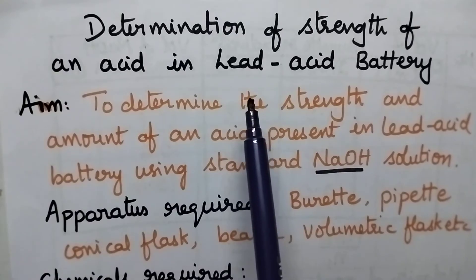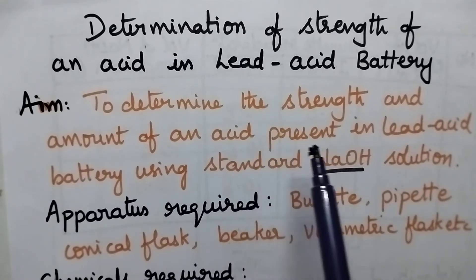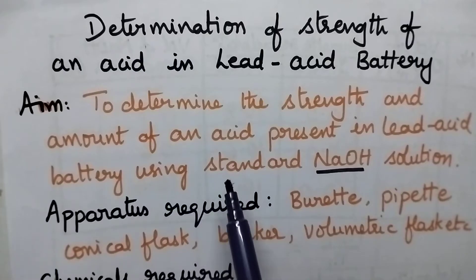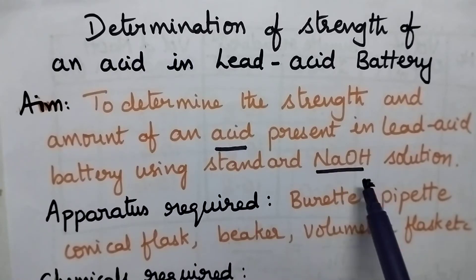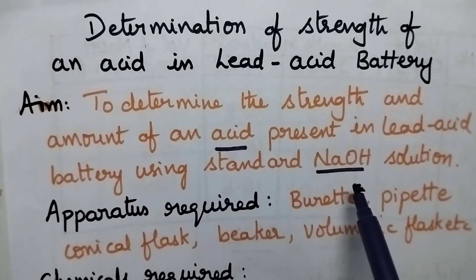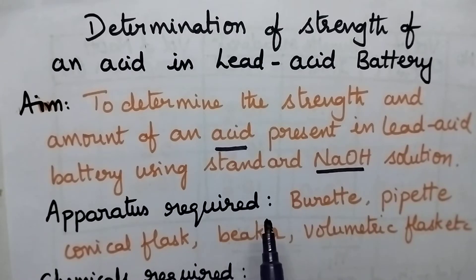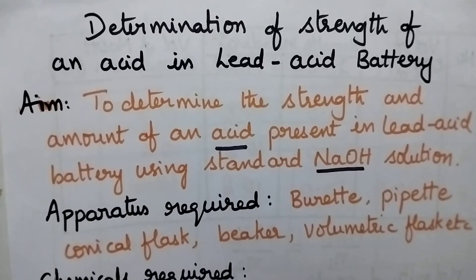In general, sulfuric acid is present in a lead acid battery, and we are supposed to determine its strength. In order to estimate the acid content, we use NaOH solution, which is a secondary standard solution. Its molarity can be determined using a primary standard acid, that is oxalic acid. On the whole, determination of strength of an acid in a lead acid battery involves two steps: standardization of NaOH solution using standard oxalic acid solution, and estimation of sulfuric acid present in the lead acid battery.